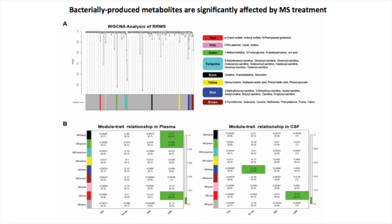The top number here represents the coefficient of the model we used, and the FDR-adjusted p-value is shown below in parentheses. As you can see, the red module, which contains bacterially produced metabolites, is reduced after treatment in both plasma and CSF of RRMS patients.